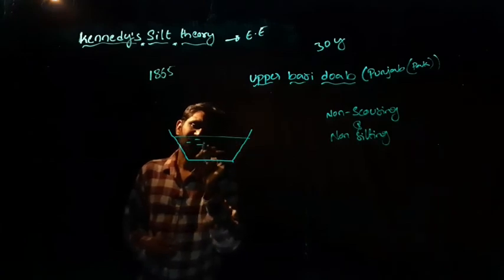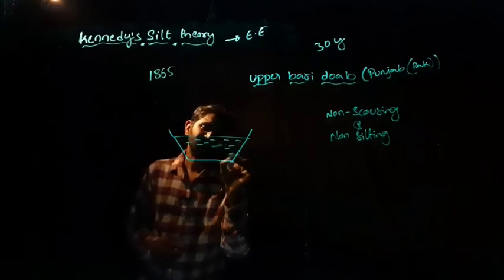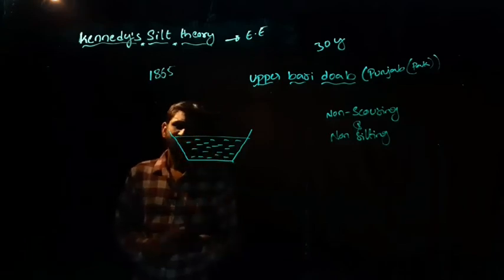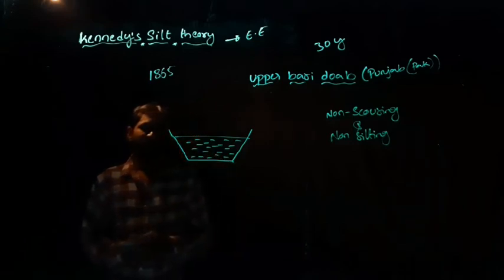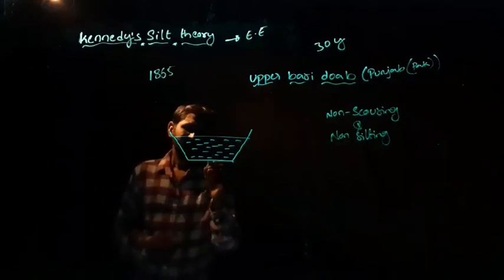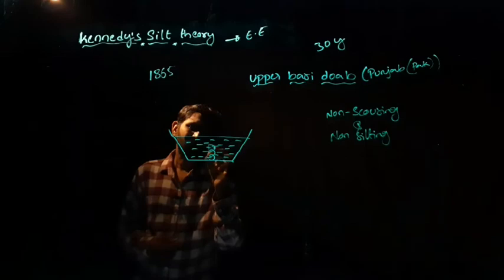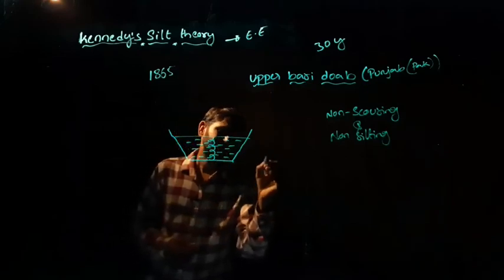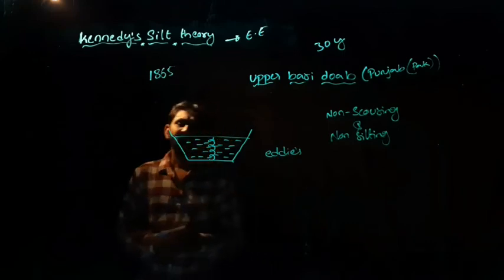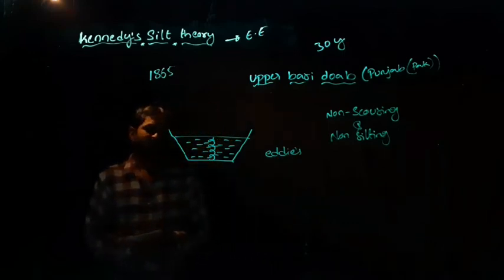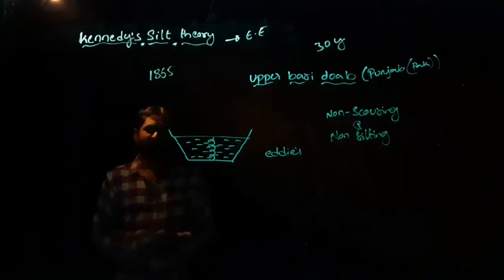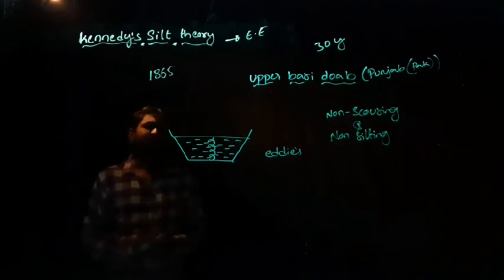When the water is flowing in these unlined channel sections, water generally carries a lot of velocity. Due to this velocity when the water is flowing, it will erode the bed. Here what happens? Eddies are going to be formed. We will call it as eddies. When the water hits forcefully to the ground, eddies are going to be formed.